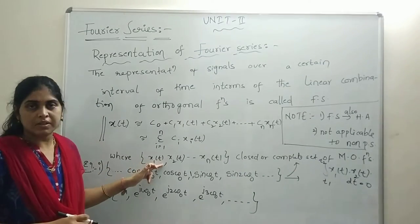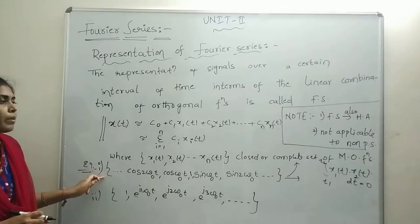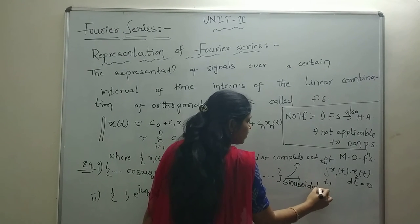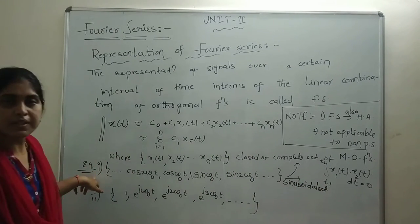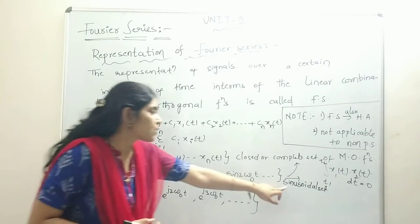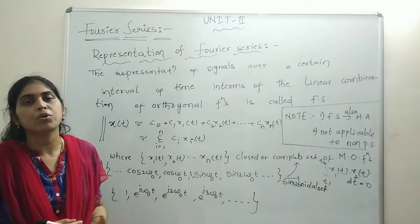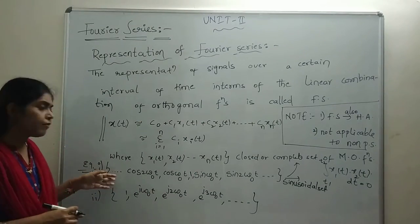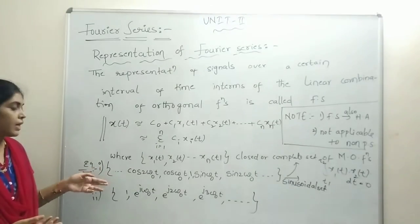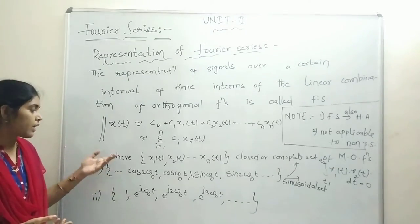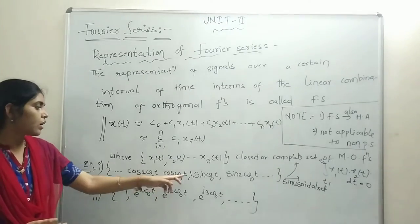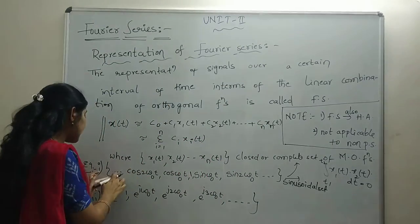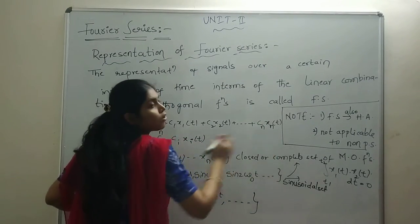A real example for a mutually orthogonal function set is the trigonometric series or sinusoidal set. The sinusoidal set contains both sine terms and cosine terms. The trigonometric set includes terms like cos(nω₀t), cos(2ω₀t), cos(ω₀t), 1, sin(ω₀t), sin(2ω₀t), and so on — an infinite number of terms may be there. This set is an example for a closed or complete set of orthogonal functions.